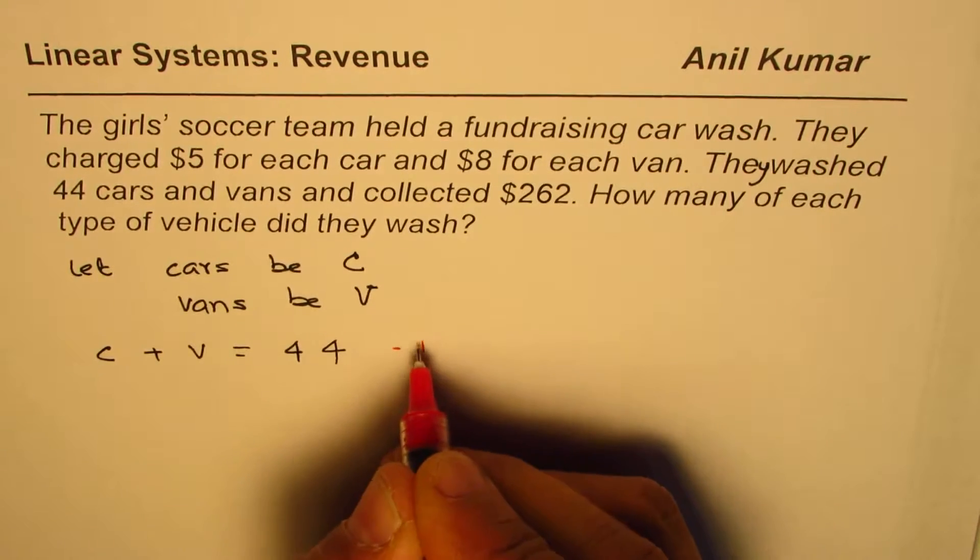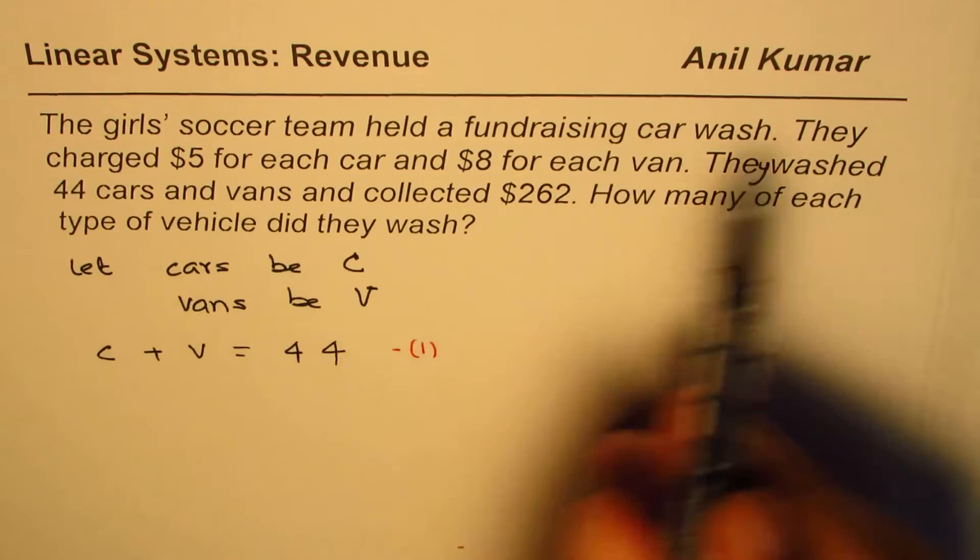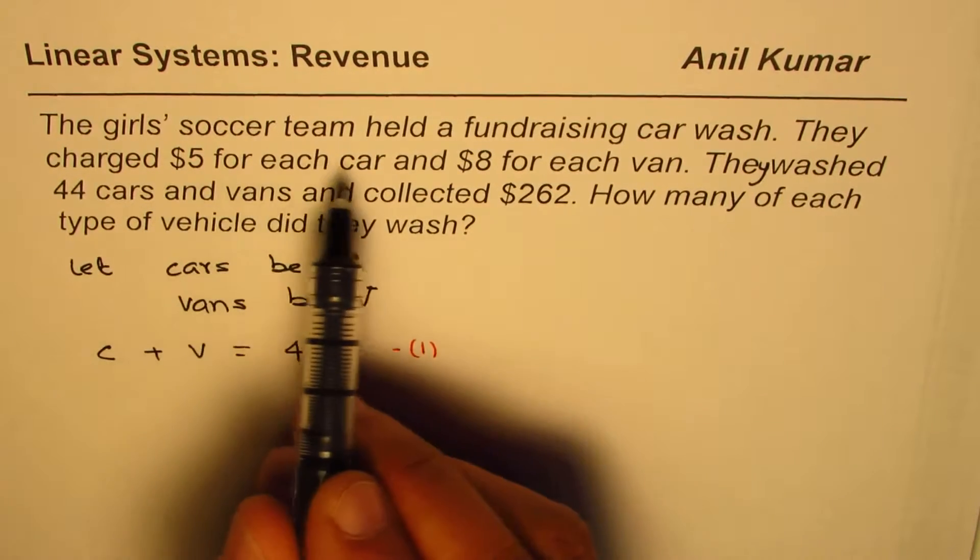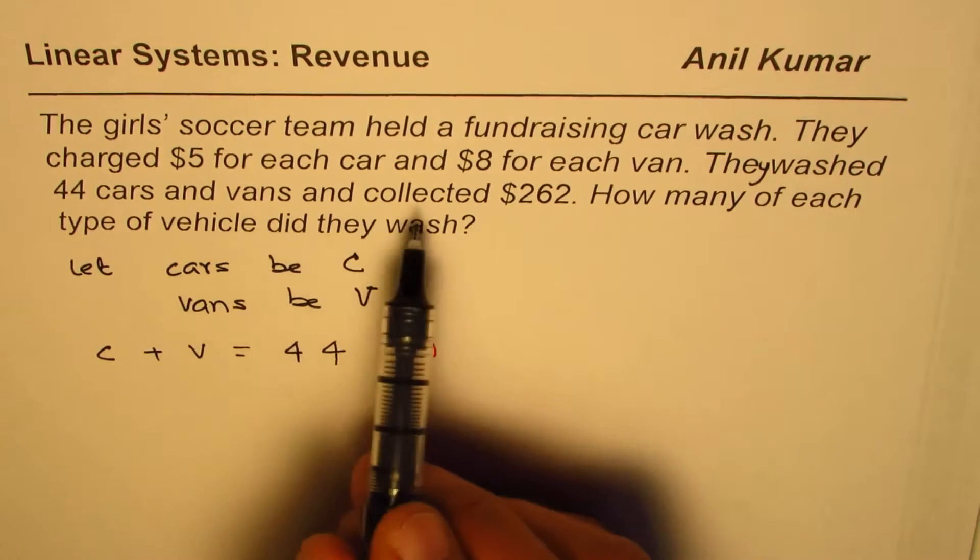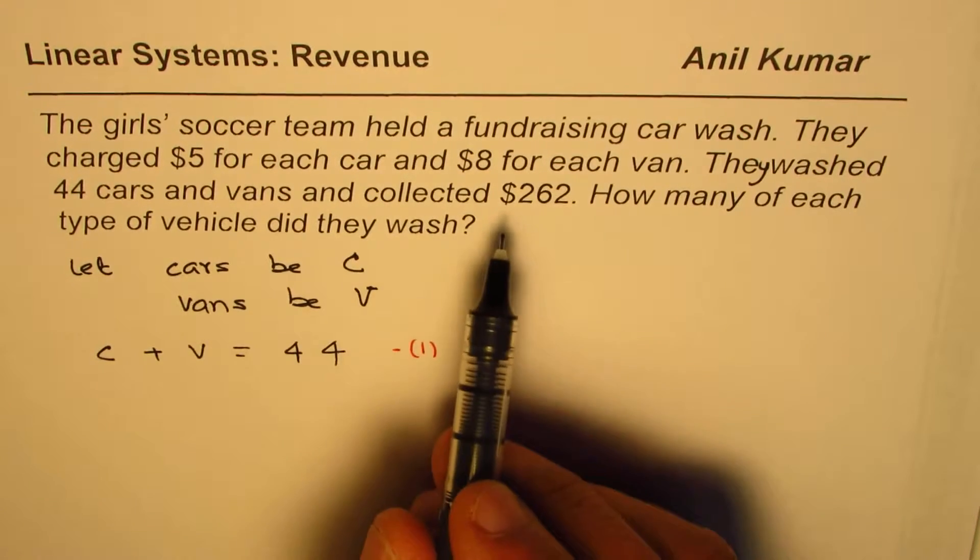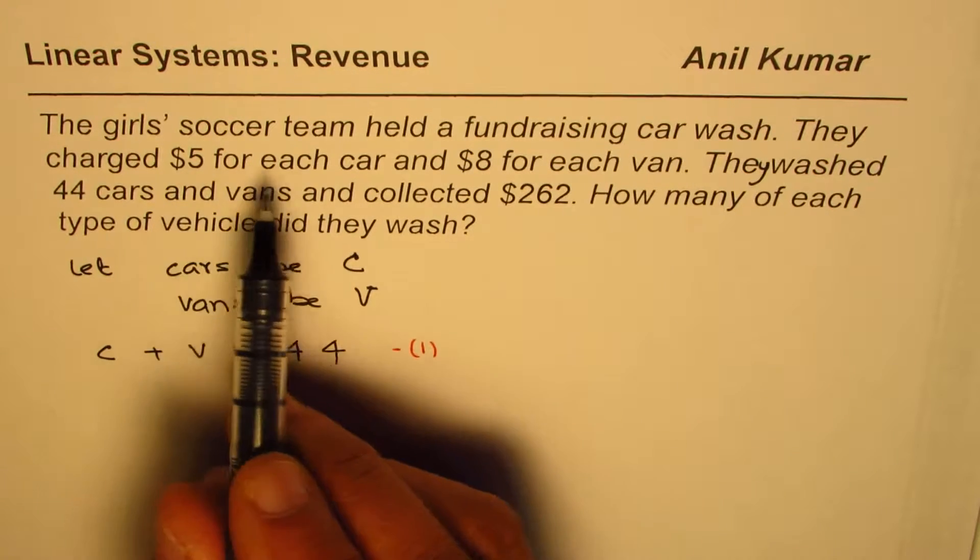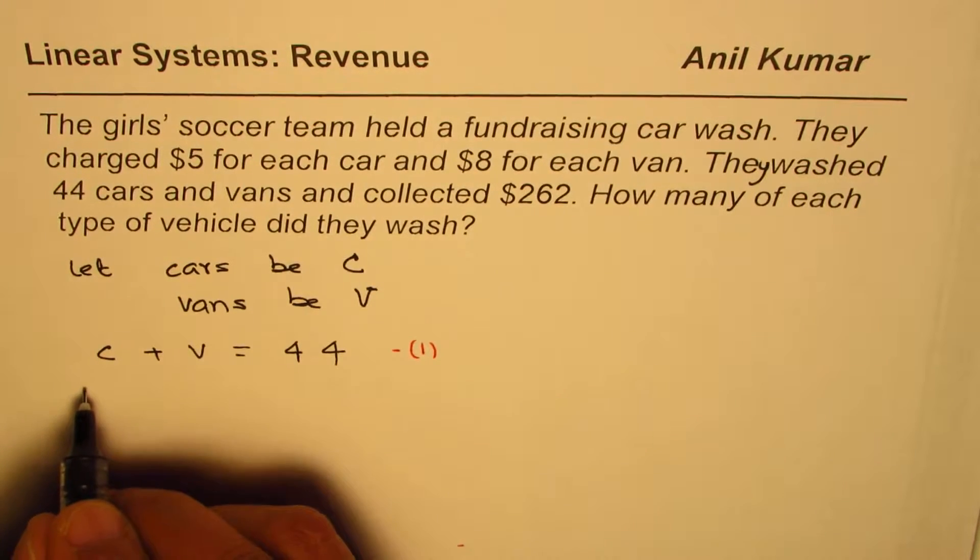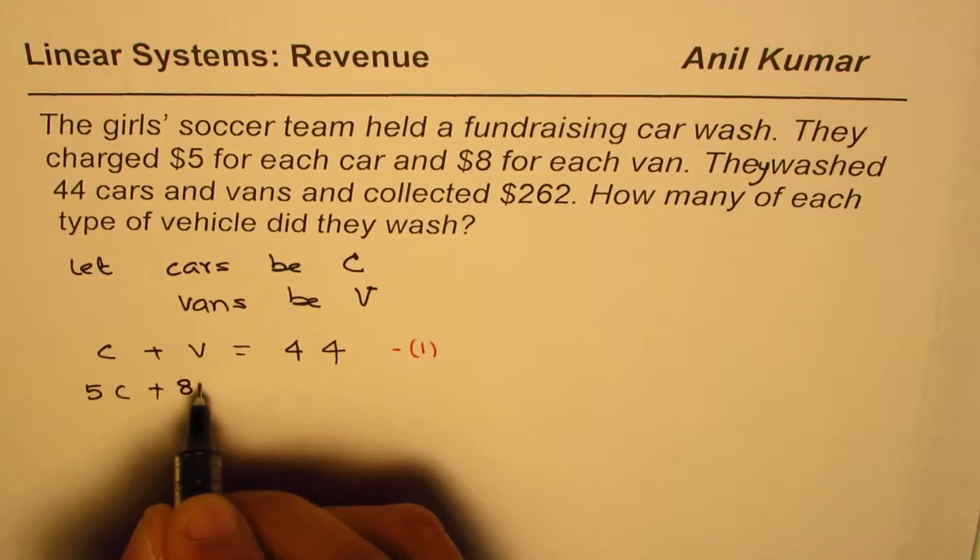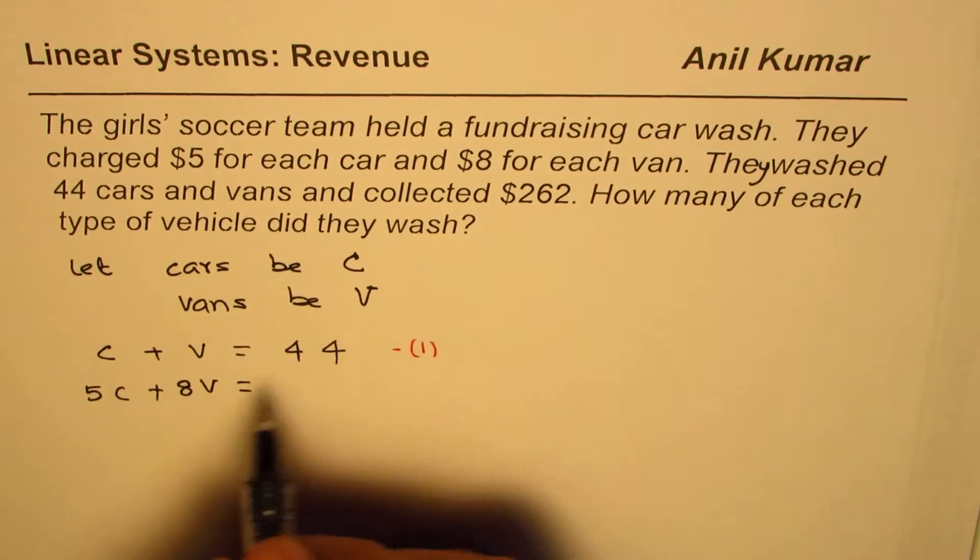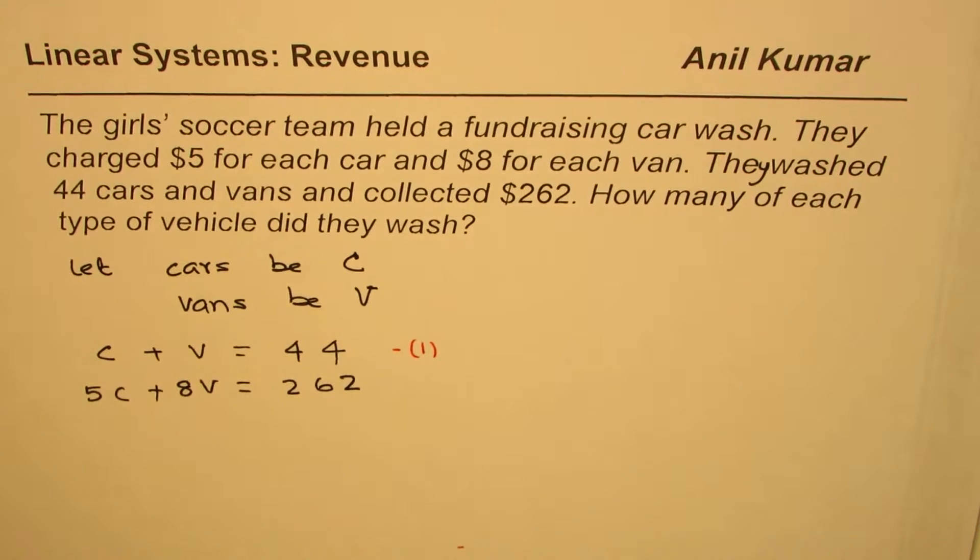The second equation comes from the revenue. They charged $5 for each car and $8 for each van, and collected $262 total. So 5C plus 8V equals 262. That gives you the second equation.